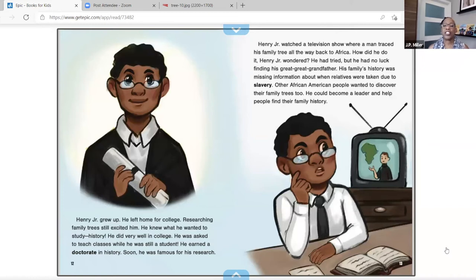Henry, Jr. watched a television show where a man traced his family tree all the way back to Africa. How did he do it? Henry, Jr. wondered. He had tried, but he had no luck finding his great, great grandfather. His family's history was missing information about when relatives were taken due to slavery. Other African Americans wanted to discover their family trees, too. He could become a leader and help people find their family history.